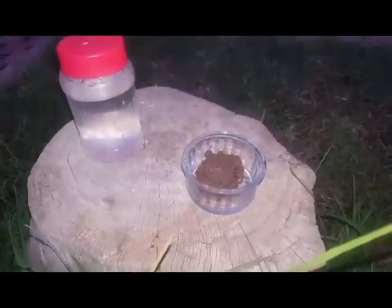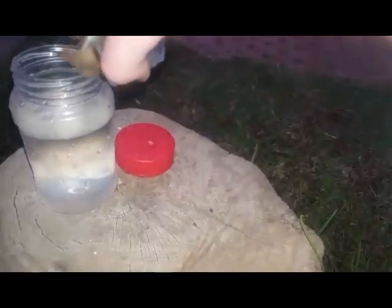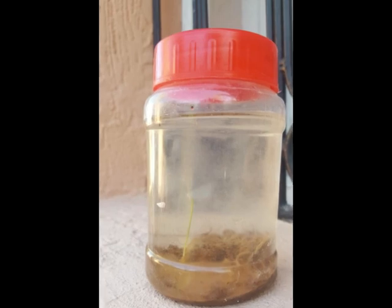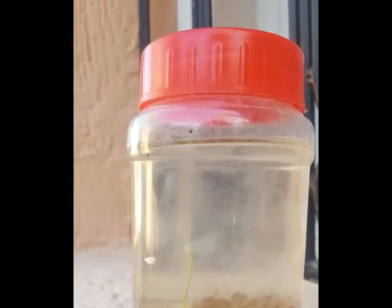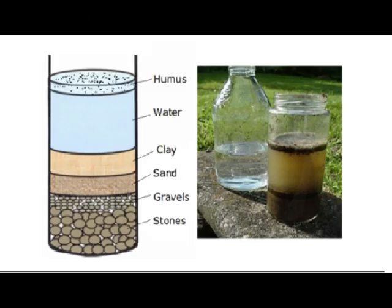First, let's define the soil profile. For that, we need to carry out an experiment. Bring a little bit of soil and a bottle full of water, pour the soil into the bottle, shake it, and let it sit overnight. Here is the final result of the experiment — as you can see, soil is made of many different fractions.